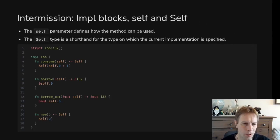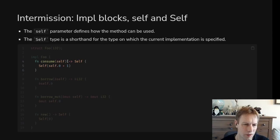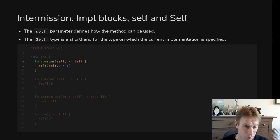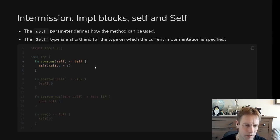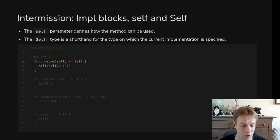Methods take self as an argument. For example, this consume method takes an argument self and you don't have to provide the type. There are some complicated cases where you will provide a type, but for the simple stuff you don't. This method is called consume for a reason — it takes self by value. That means inside the method you can use self, but once you finish calling that method it's been consumed. The thing you called it on has been moved into the method. So if you call consume, you can no longer use the thing you called it on — it's been moved in. Interestingly, in here it's been used to create a new instance of the same thing — a new instance of Foo.